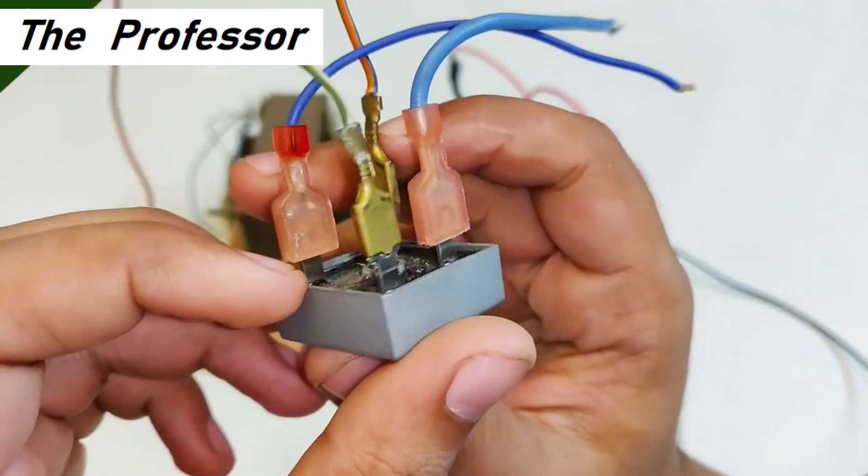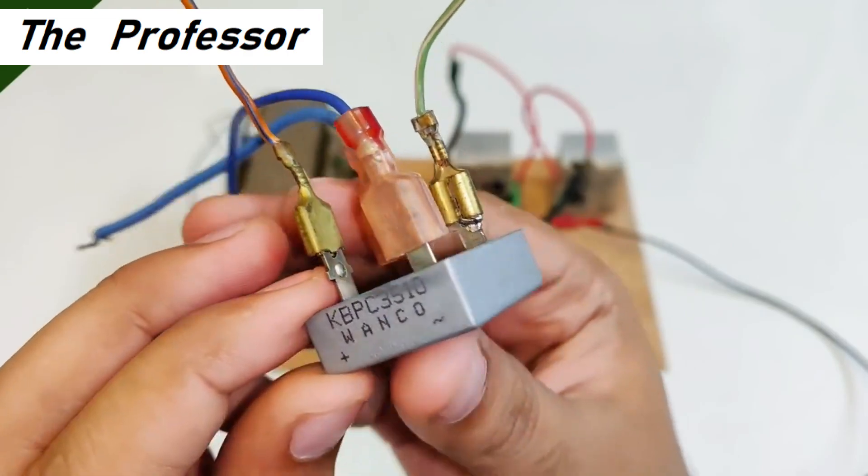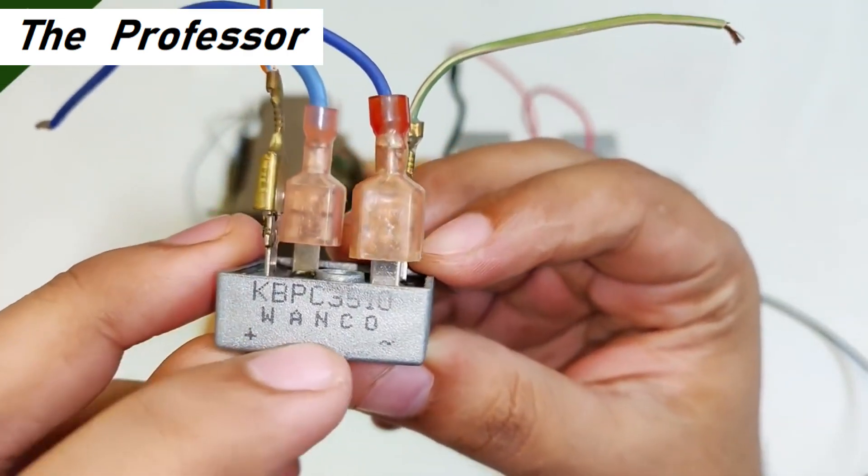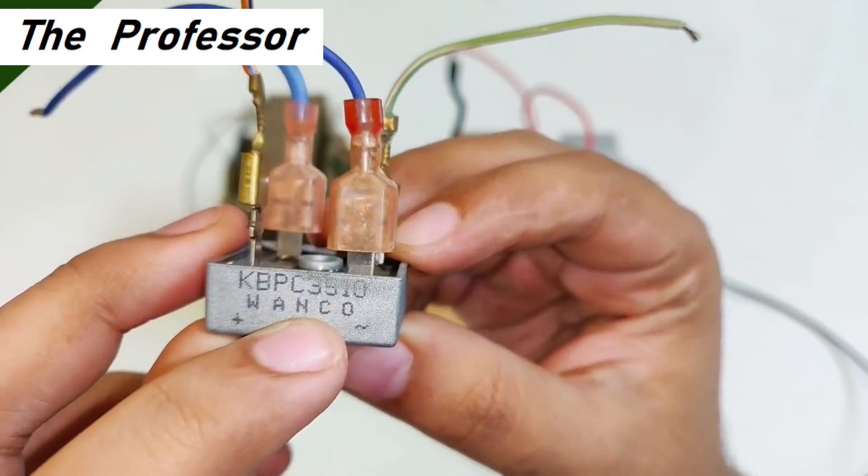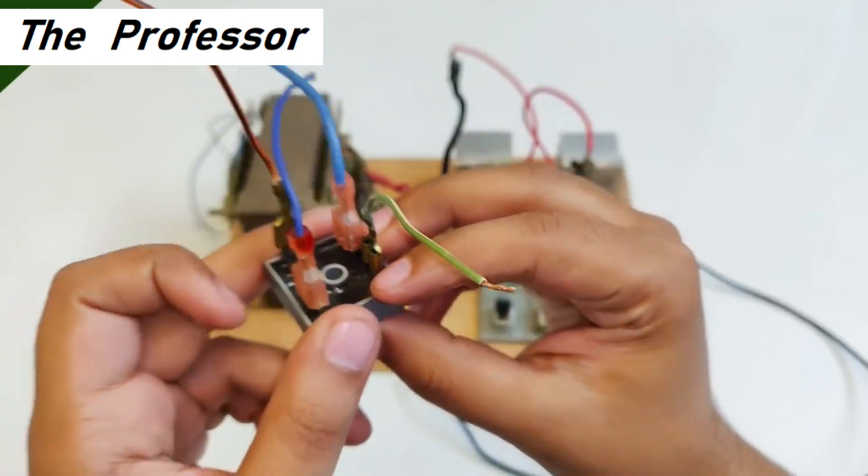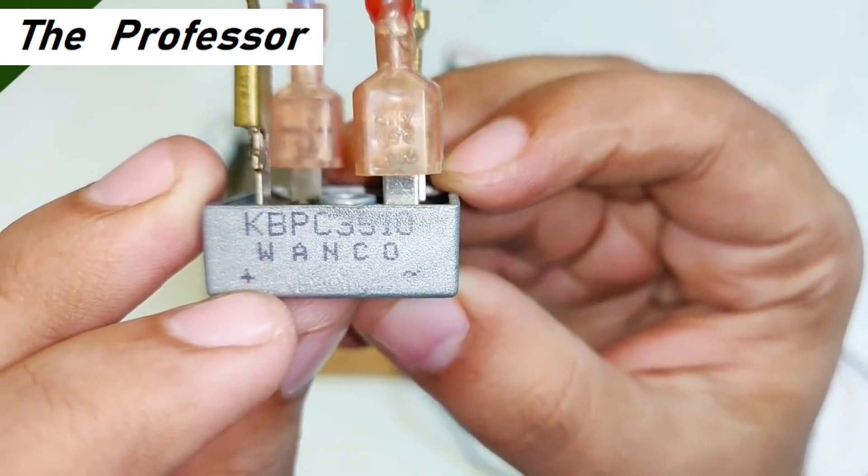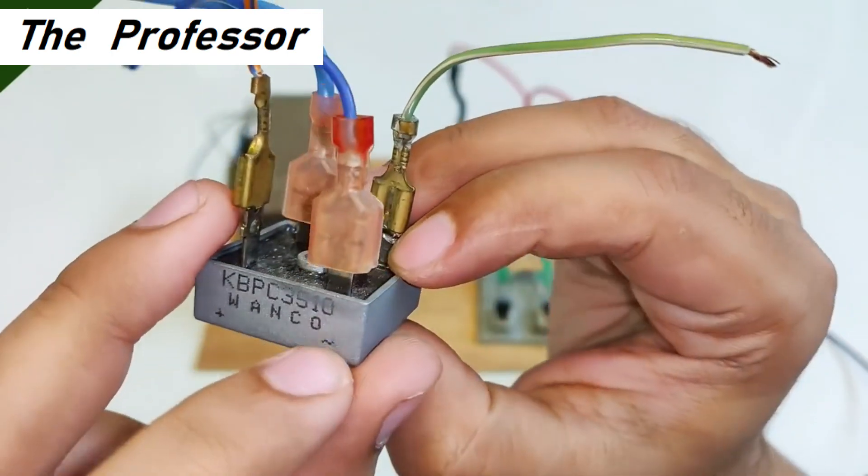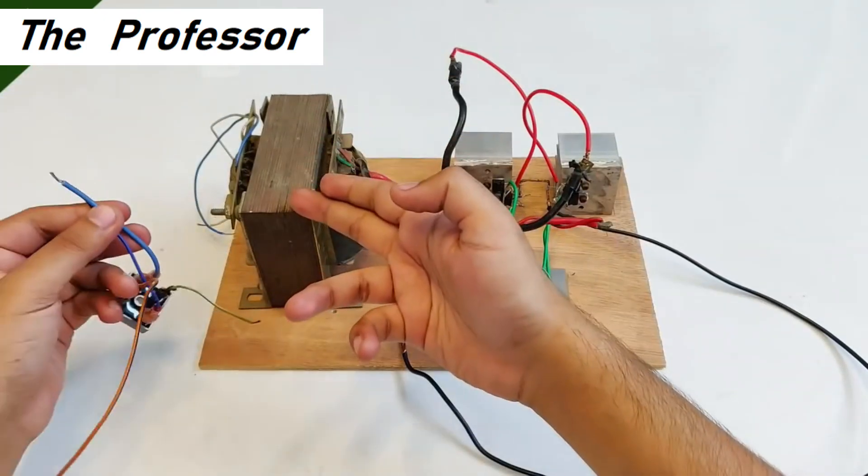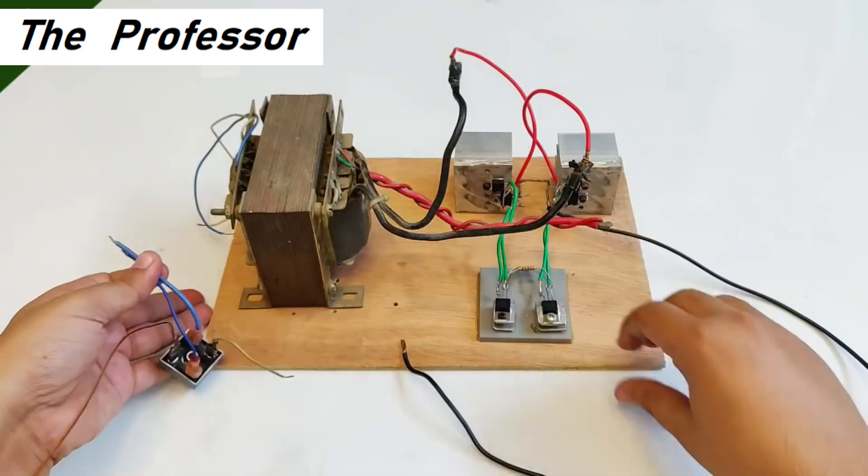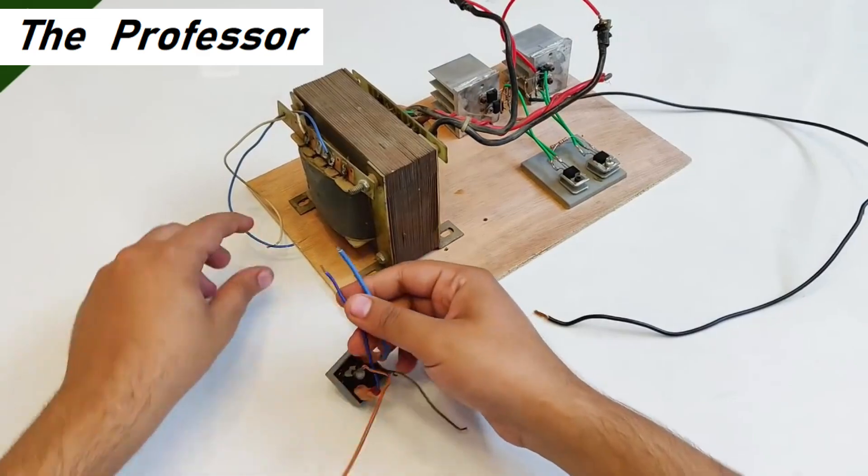Here as you can see I have a bridge rectifier that converts AC supply to DC supply. WANCO KBPC 3510, capability of up to 35 amperes. This terminal is AC and this is DC positive. AC represents the blue wires which will be connected to the output terminals, the high voltage side of the transformer.